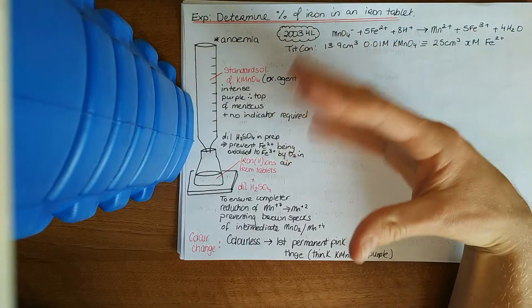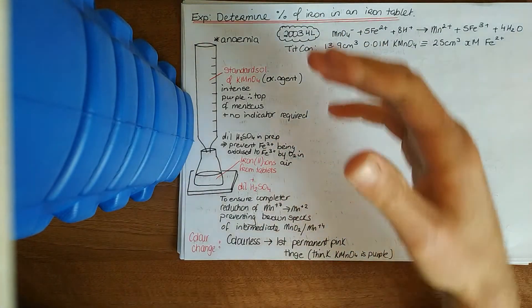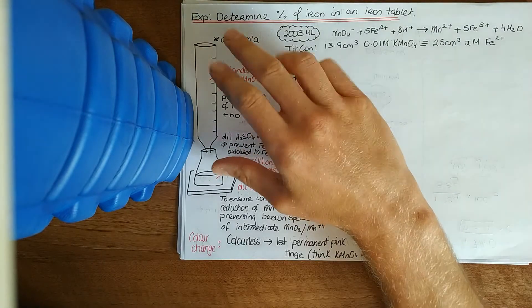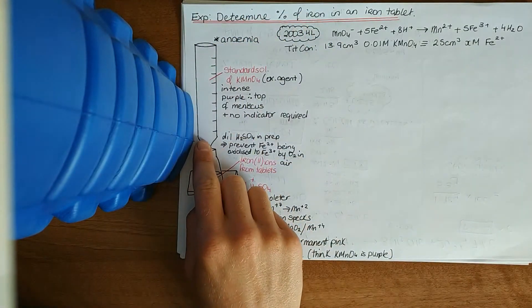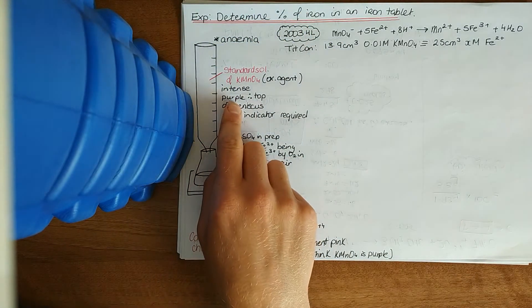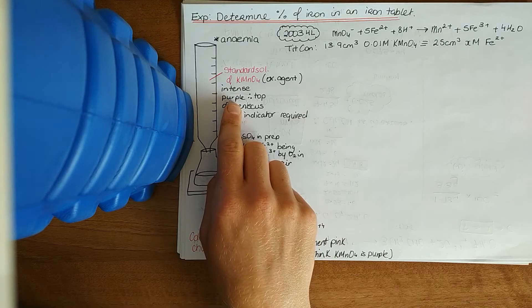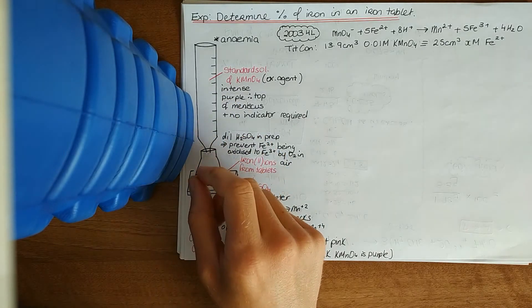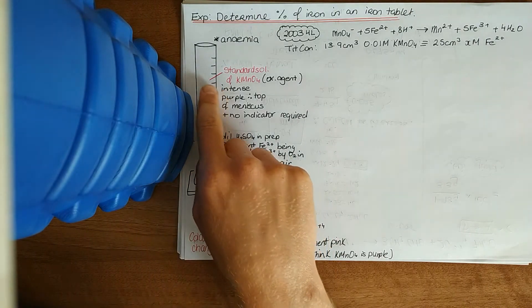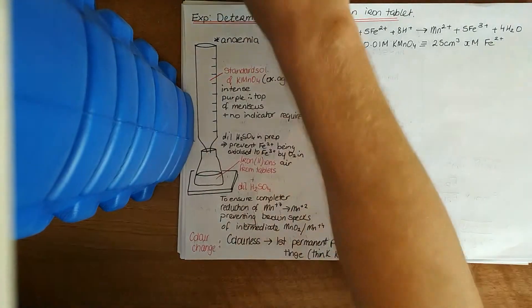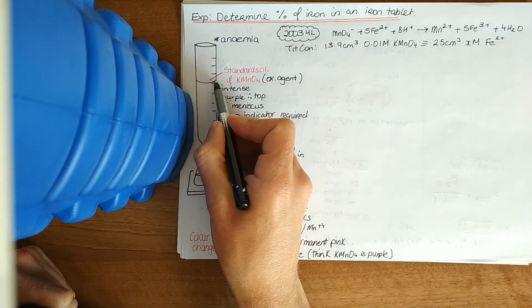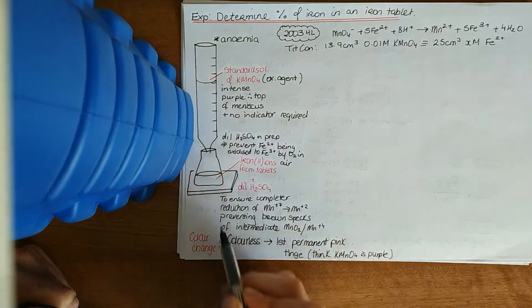Looking at the setup here, you have your standard solution of KMnO4 always in your burette. Notice it's got an intense purple color. Because of the intense purple color, glassware often stains. Instead of taking readings from the bottom of the meniscus, you take them from the top of the meniscus.